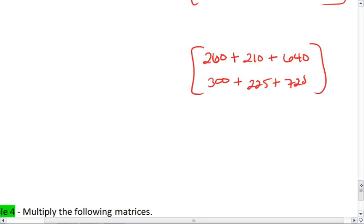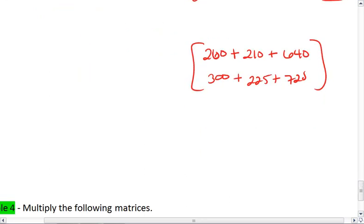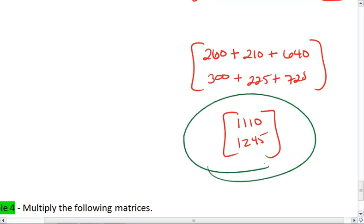We simplify just a little bit further. 260 plus 210 plus 640 gives us 1,110. Then 300 plus 225 plus 720 gives us 1,245. And that is our final answer.